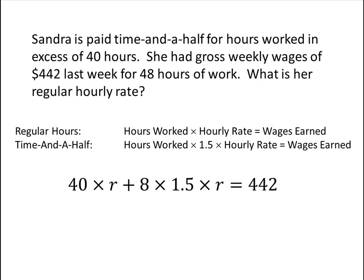So now we simply have to combine these expressions on the left-hand side. 8 times one and a half is 12, 40 plus 12 is 52.